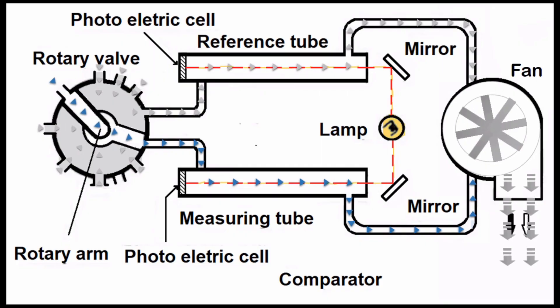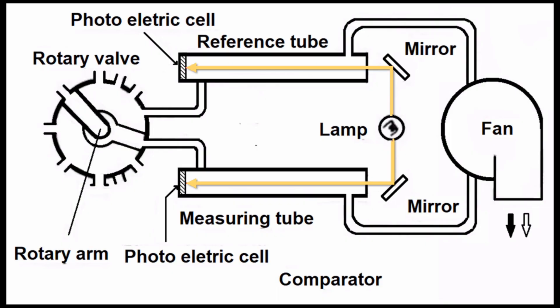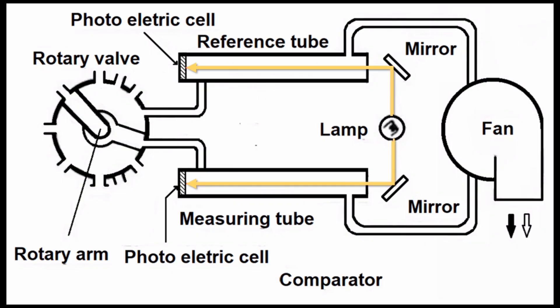If the concentration of oil mist in the measuring tube rises, the intensity of light reaching the photoelectric cell reduces. Now as both the tubes are electrically connected, reduction in the generation of electric current will induce an electric imbalance between the two cells, which will lead to ringing of the alarm.